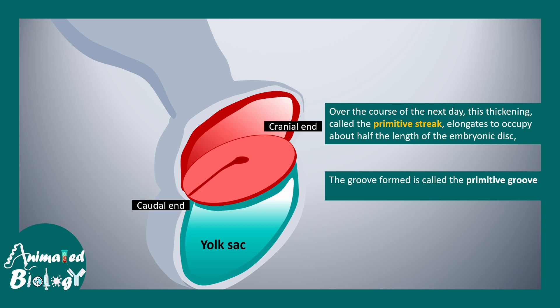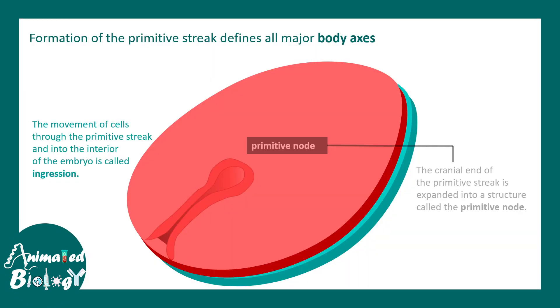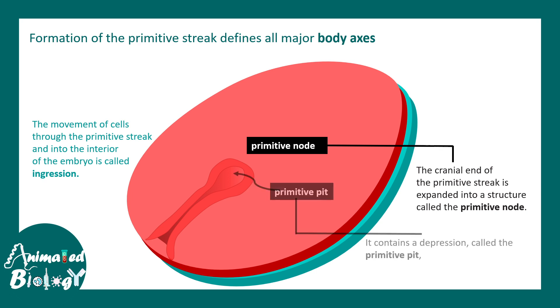At the cranial end of this primitive streak, there is a formation known as the primitive node. This primitive node is really important to understand the process of gastrulation. A depression around the primitive node is formed, which is known as the primitive pit.